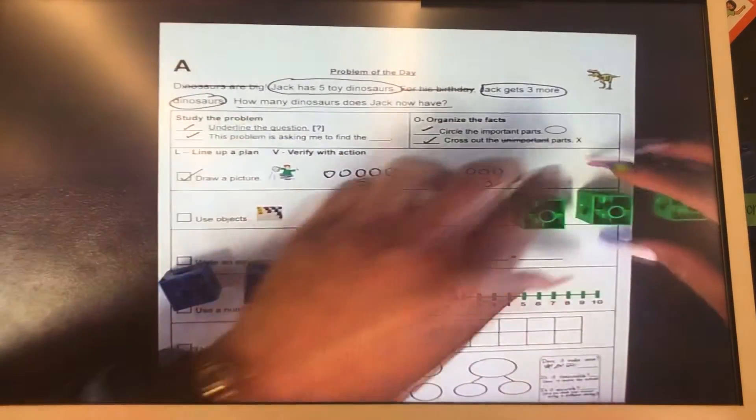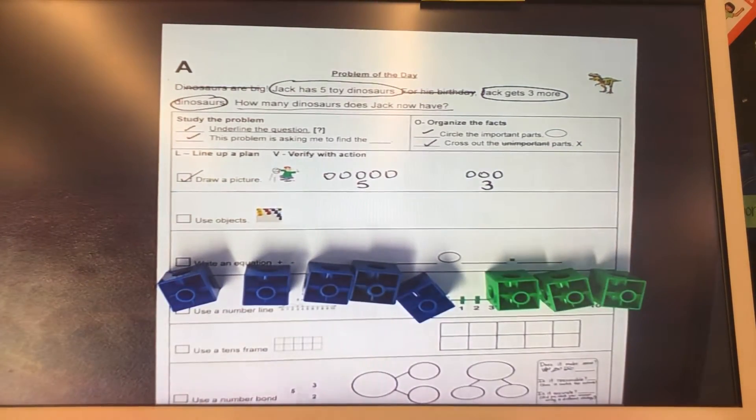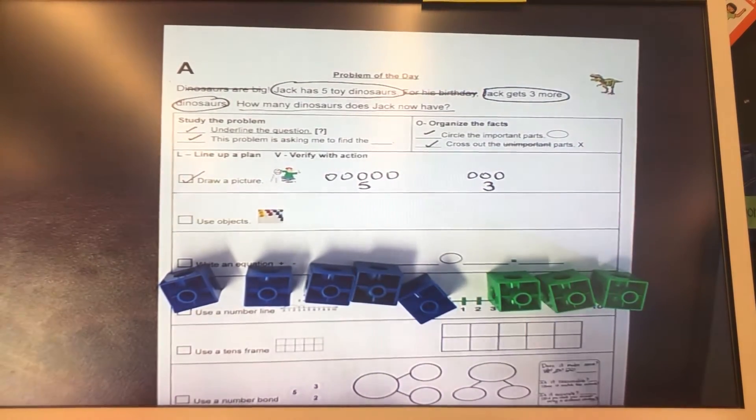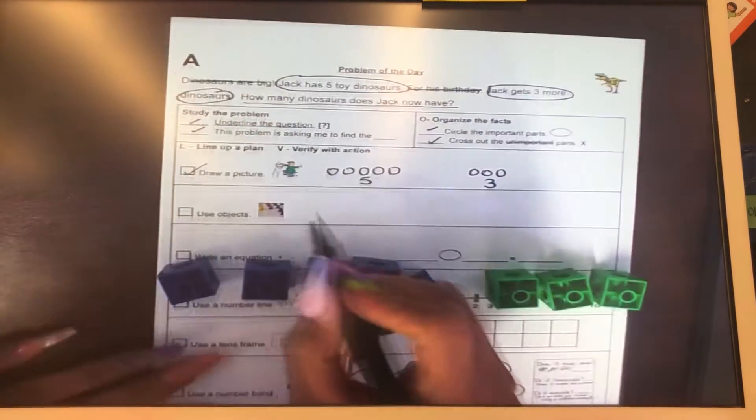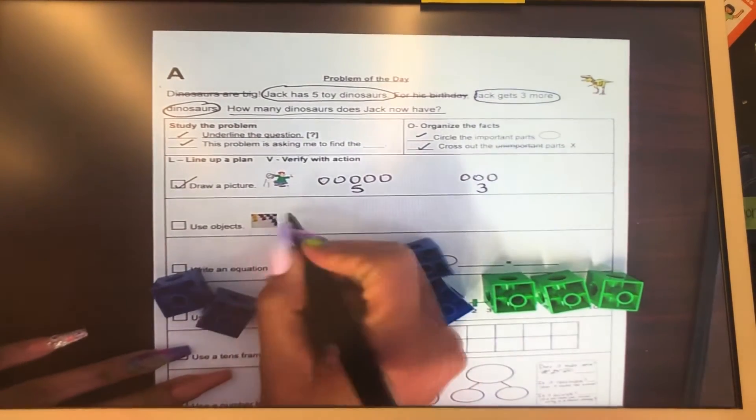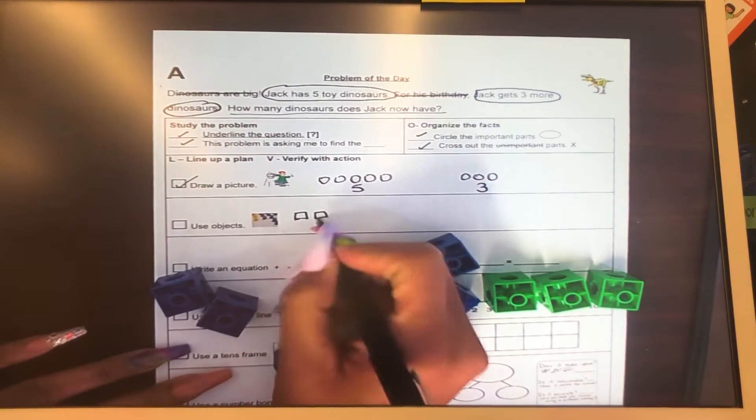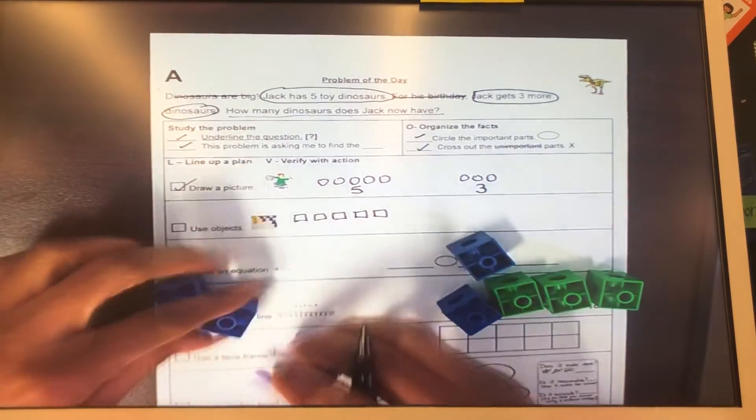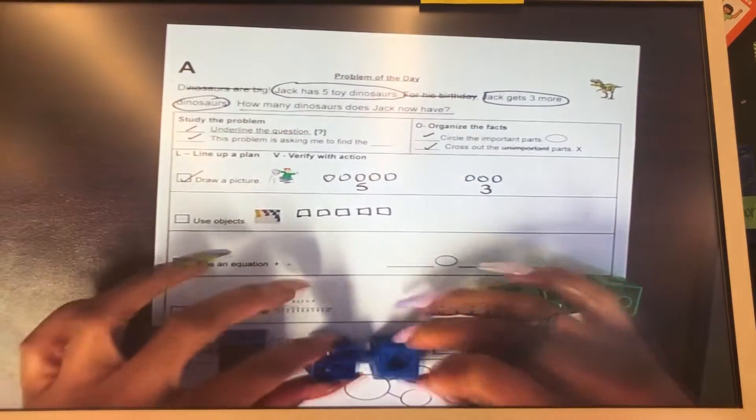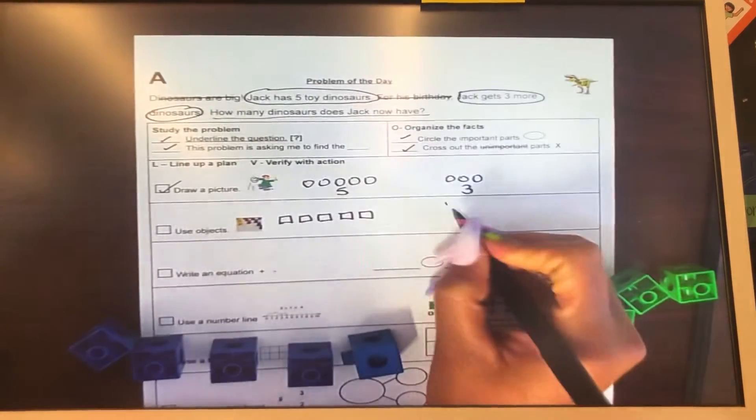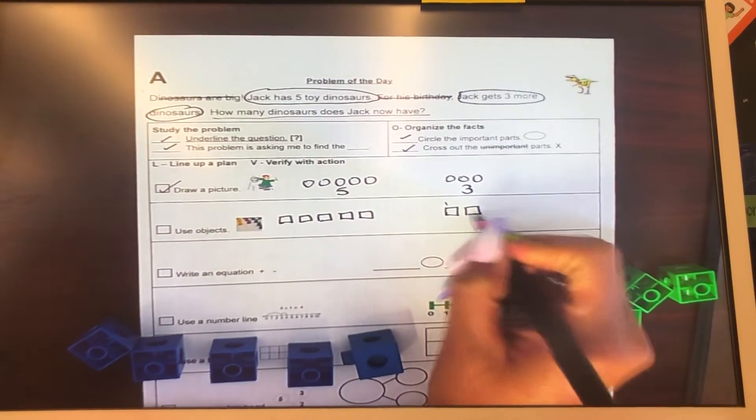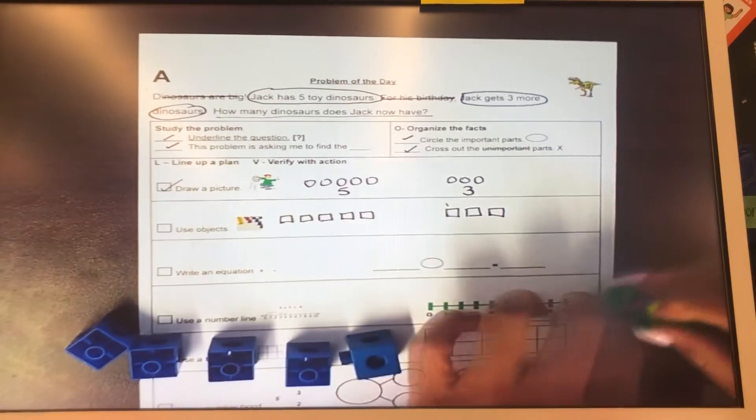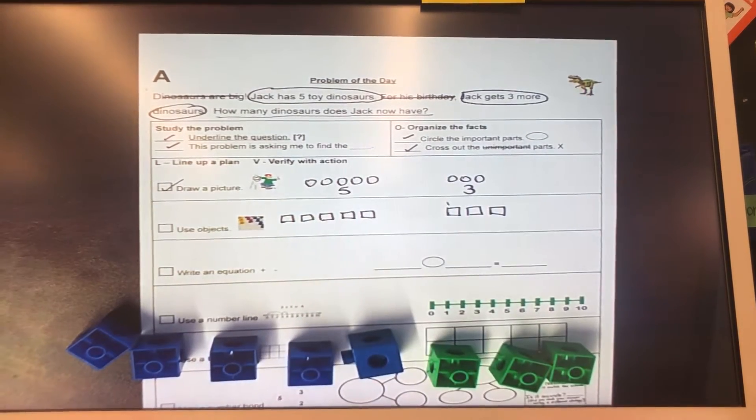Let's put that on our papers. So let's draw our cubes to reflect our objects. So we have one, two, three, four, five. That's our five blue ones. And then we have one, two, three. That's our three green ones.